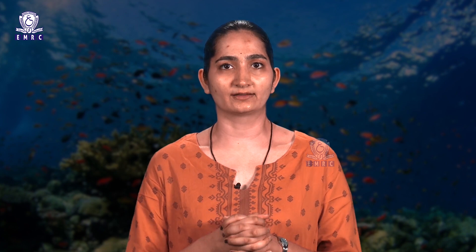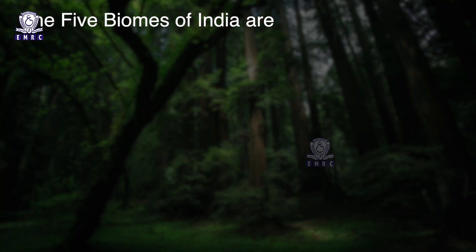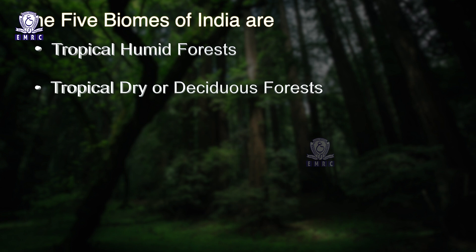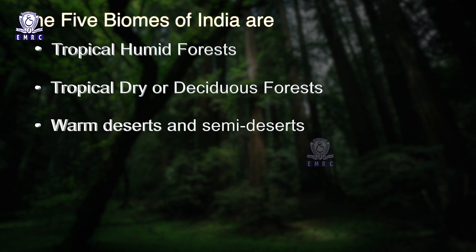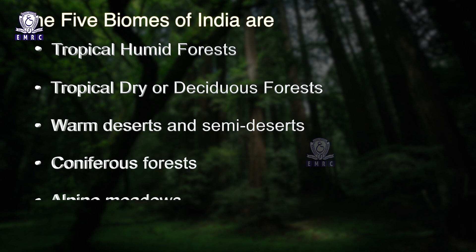The term biome means the main groups of plants and animals living in areas of certain climatic patterns. It includes the way in which animals, vegetation, and soil interact together. The five biomes of India are: the tropical humid forests, the tropical dry or deciduous forests, warm deserts and semi-deserts, coniferous forests, and the alpine meadows.